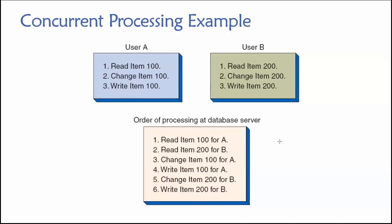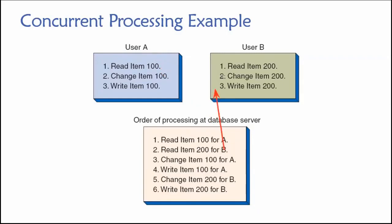The database receives requests to read the number of units for items 100 and 200 at the same time, so it arbitrarily selects one task first — maybe it reads item 100 and returns that to user A's transaction, then handles user B's request. Then it processes the changes: it changes item 100 for A and saves, then changes item 200 for B and saves. In this case, there's no concurrency problem because our two users are working with different data.